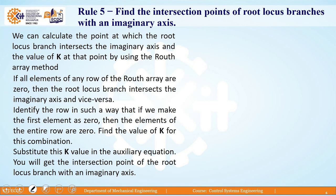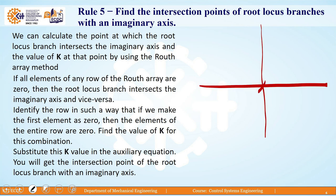Rule number 5 addresses the intersection point of the root locus branches with the imaginary axis. Continuing the illustrative example with poles at S = 0, S = −3, and S = −5, the centroid is located and three branches start from the individual poles.